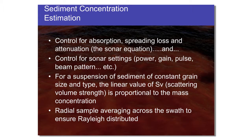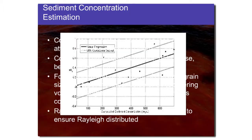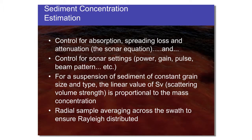For a suspension of a constant grain size and type — a small assumption — the linear value of the scattering volume strength is proportional to the mass concentration of the scatterers in the water column. By conducting a simple averaging procedure across the swath width to ensure returns are reliably distributed, we can relate the backscatter of the acoustic pulse in the water column to suspended sediment concentration. By obtaining direct samples, we can come up with linear relationships for scattering volume strength to suspended sediment concentration.